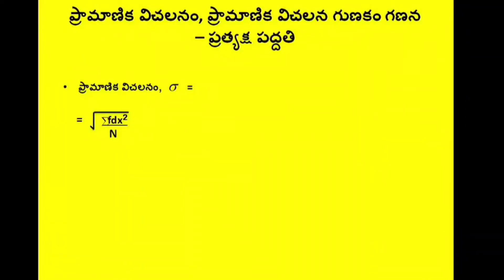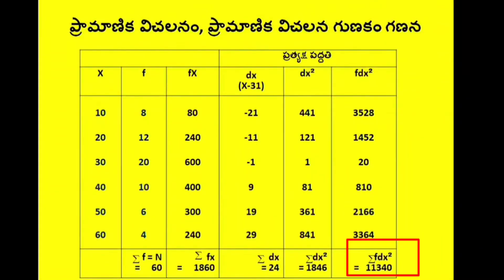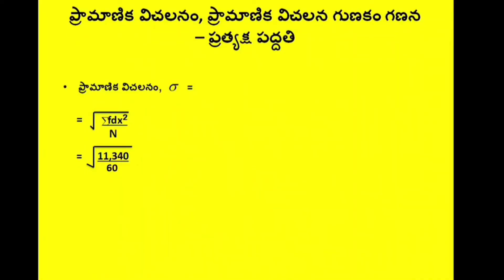We have to calculate the root of sigma fdx² by N. Sigma fdx² is equal to 11,340 and n is equal to 60. So root of 11,340 by 60 equals root of 1134 by 6, which equals root 189, which equals 13.74.